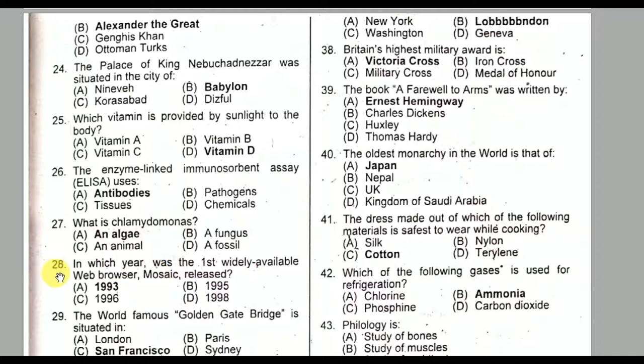Question number twenty-eight: In which year was the first widely available web browser Mosaic released? It was released in 1993. Option A is the correct option.